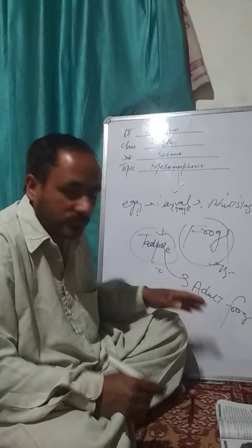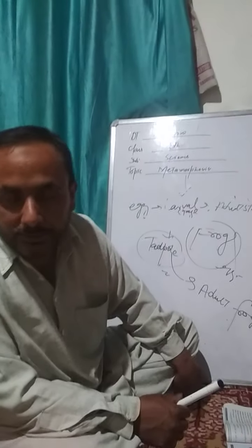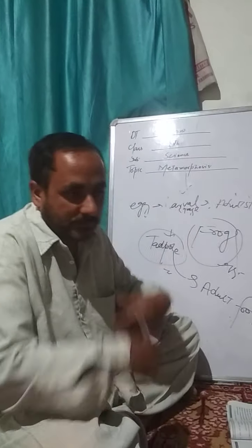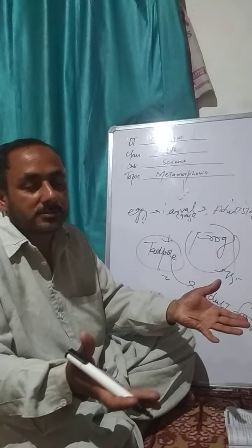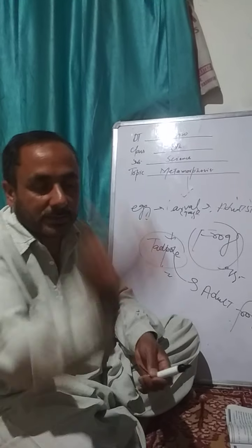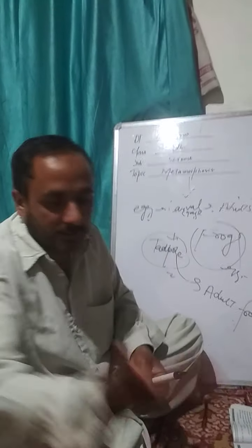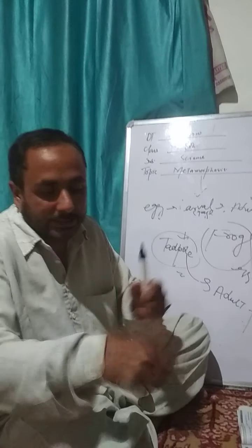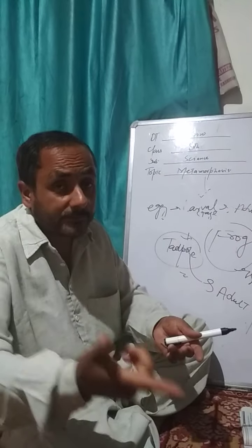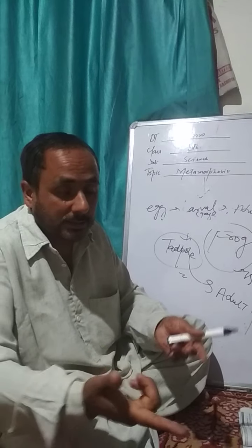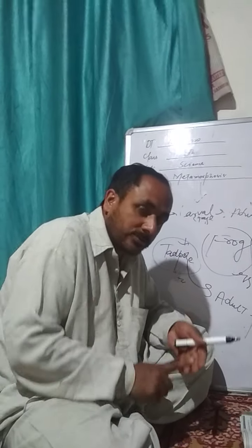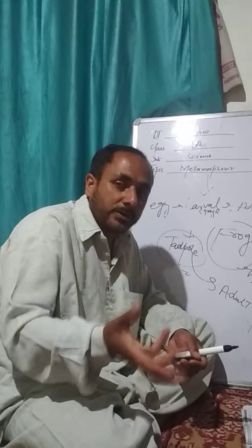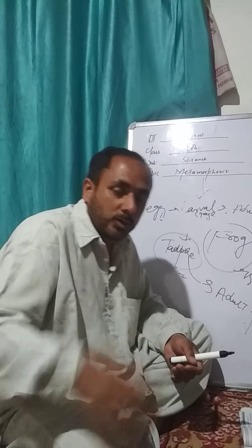Using the frog as an example: this is the larva, this is the tadpole. This is the body that changes. The frog uses jumping; the tadpole uses swimming. This is the frog — from larva into adult. This is metamorphosis.